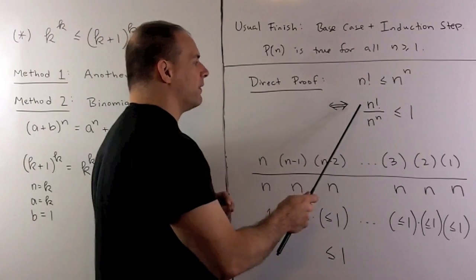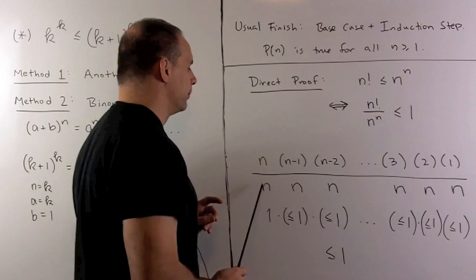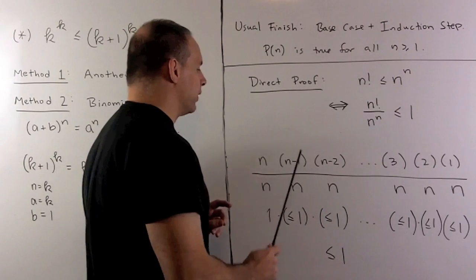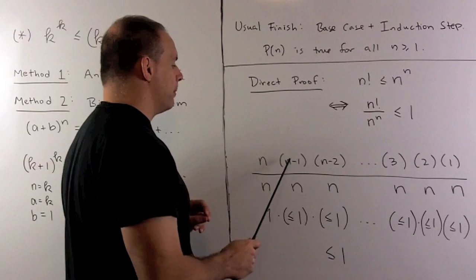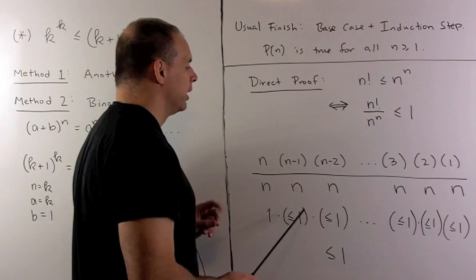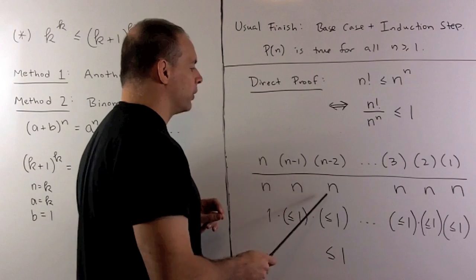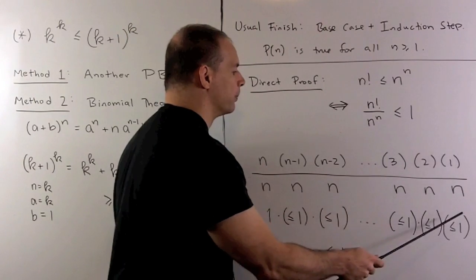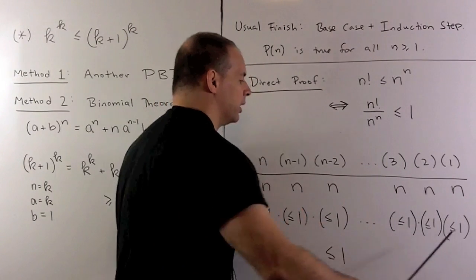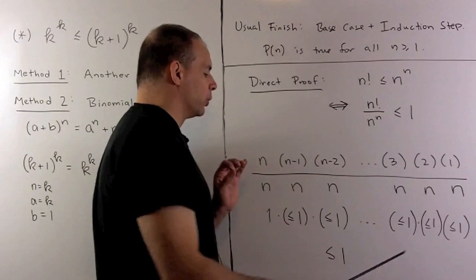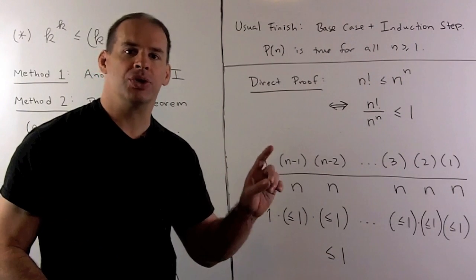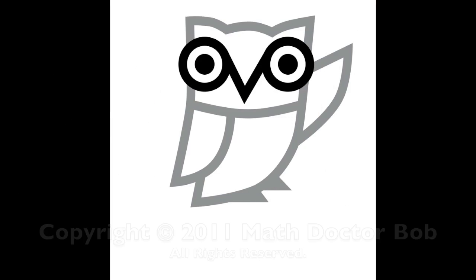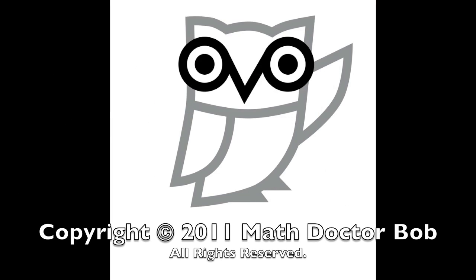If we line everything up, then n over n is 1, n minus 1 over n is a number that's less than or equal to 1, and we're going to have this less than or equal to 1 for each as we move on down. When I take the product, since all these numbers are less than or equal to 1, then the product's less than or equal to 1, and that shows proof of our statement directly. Thank you.